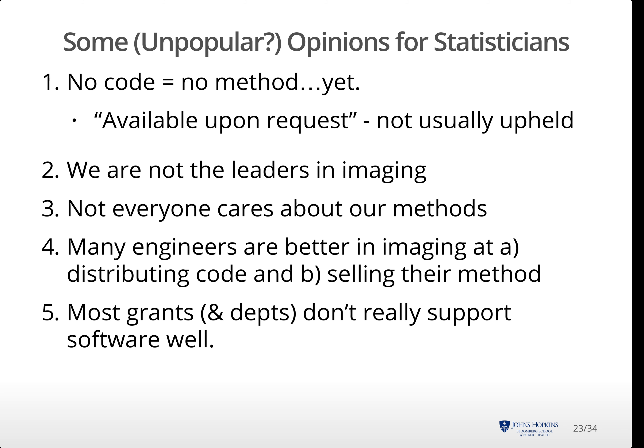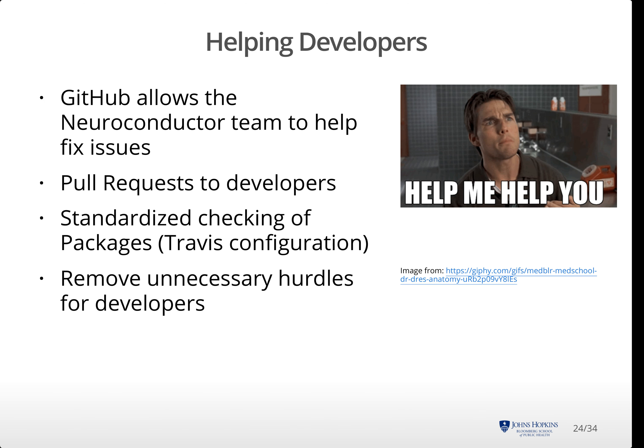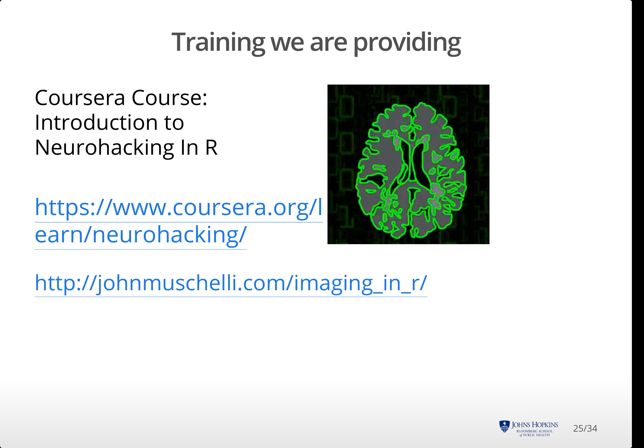Many departments, including grant support, do not support software well, but in some respects expect it. We agree developing packages is hard. We try to help developers get their package in order and stable. As we work on GitHub, helping researchers with pull requests is natural. Our expertise allows us to quickly identify problems and fixes for many common package issues. We have created a Coursera course, Neurohacking in R, to help new researchers starting out in imaging. I also have an updated set of tutorials on my website which are up all year-round. This allows us to train new collaborators or students before starting full research projects.